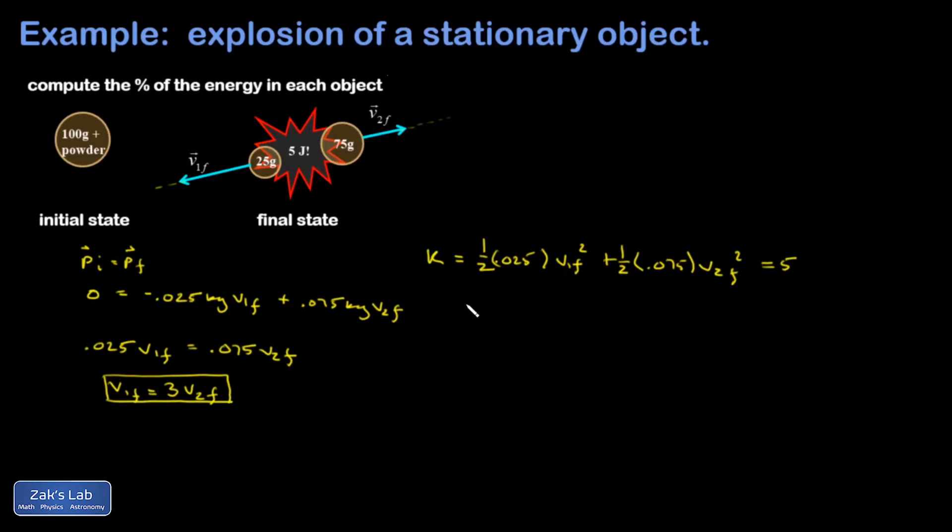So I'm going to clean this up before I do a substitution on it. I'm going to go ahead and multiply both sides by 2 to get rid of those one-halves. And then I'll multiply both sides by 1,000 just to clean up the decimals. So I end up with 25 V1 final squared plus 75 V2 final squared equals 10,000.